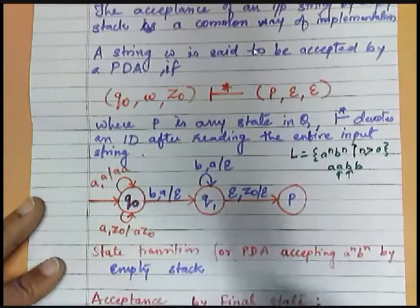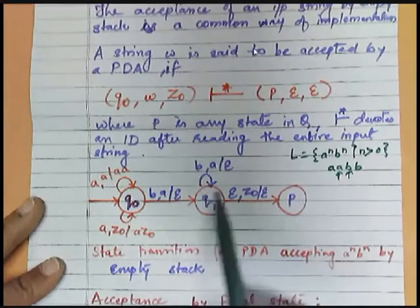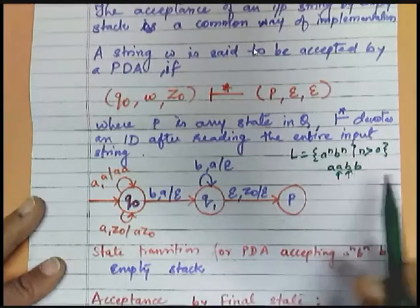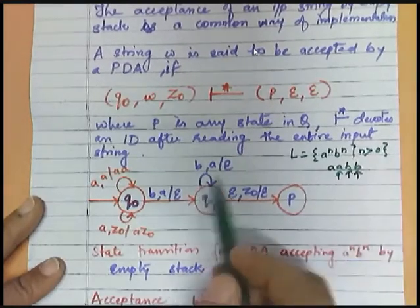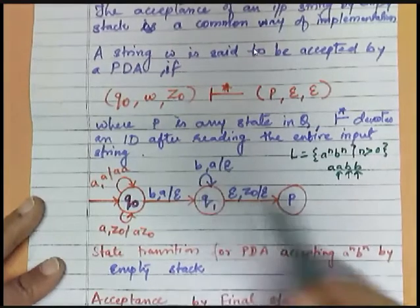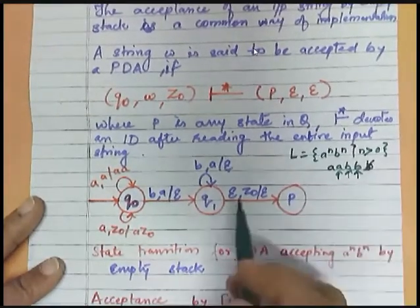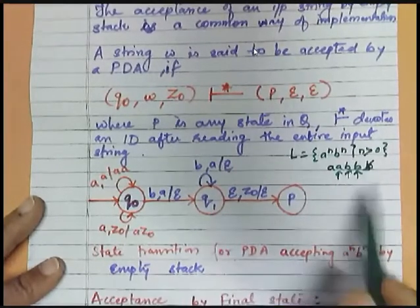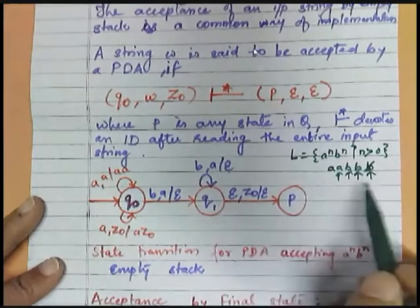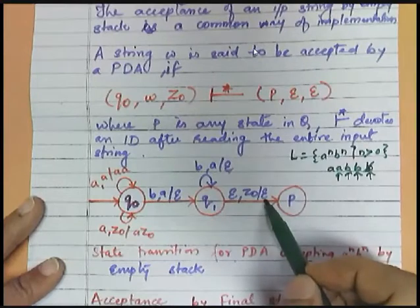Next you are reading 'b', so it is moving to q1 state. Top of the stack is 'a', then you are doing pop operation. After popping, you are here. If you are again reading 'b', you are popping again. So it will be a continuous process.